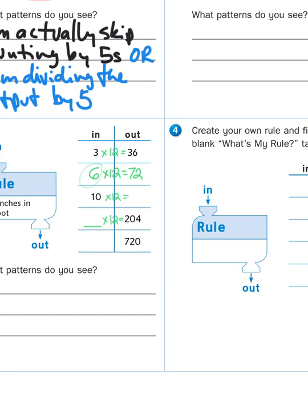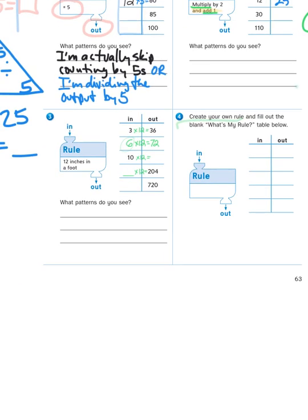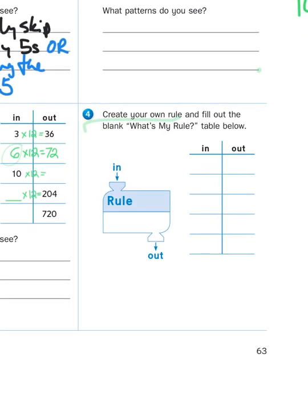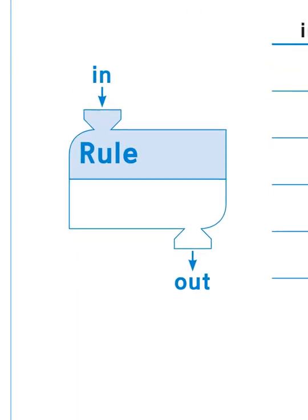Now finally, in box number 4, it says create your own rule, and then fill out the blank what's my rule table below. This is where you get to use a little creativity. So you might come up with a rule. Let's say you're going to multiply everything by 7. Maybe your rule is times 7. Or maybe you don't want to do that. Maybe you have a different rule in mind. Maybe you want to subtract 12. Maybe that's your rule. Or maybe you don't want to do that. Maybe your rule is you want to double the input.